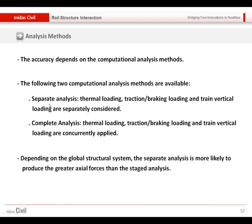The other way is using the staged analysis. So first, in the first stage, we can consider only the thermal load and in the second stage, with the accumulated results from the thermal load, we will change the stiffness of the ballast and then train load will be applied.